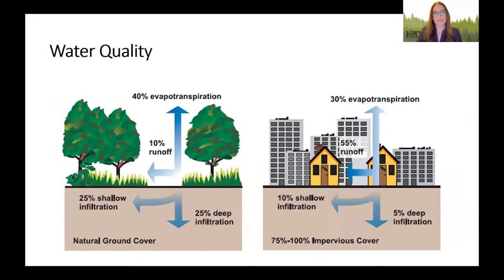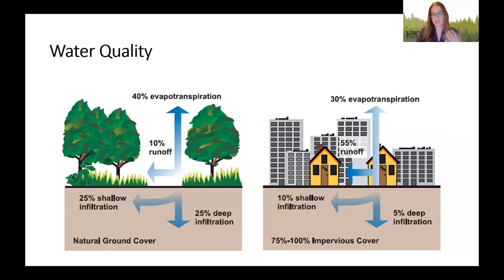For water quality, plants help to improve water quality generally. They prevent erosion, absorb water before it runs off into water bodies, and help to filter out pollutants. In a natural area, there is about 50% infiltration of stormwater compared to 15% in a more urban area, which is due to many roads and buildings being impervious surfaces. About 10% of water runs off in a natural setting, compared to 55% in a more urban one.